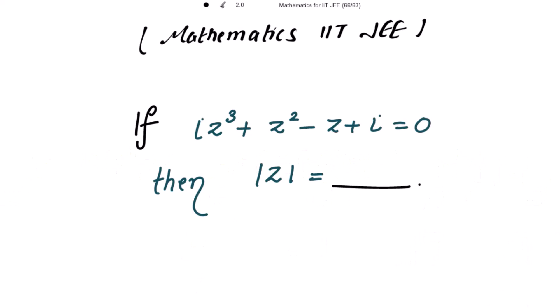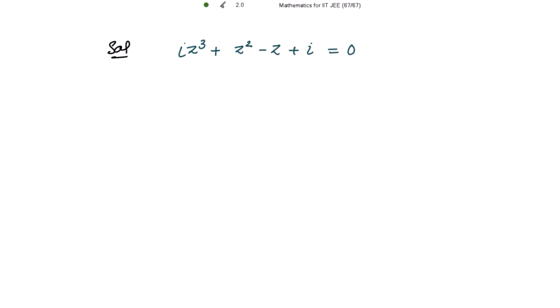It is given that iota·z³ + z² - z + iota = 0, and we have to find the absolute value of z. This given equation can be further rewritten.